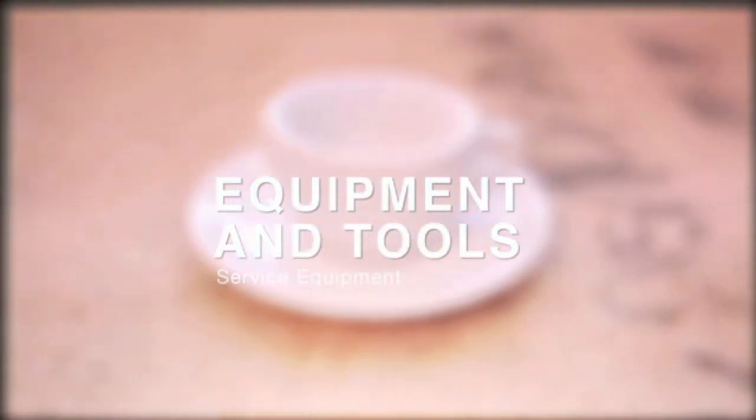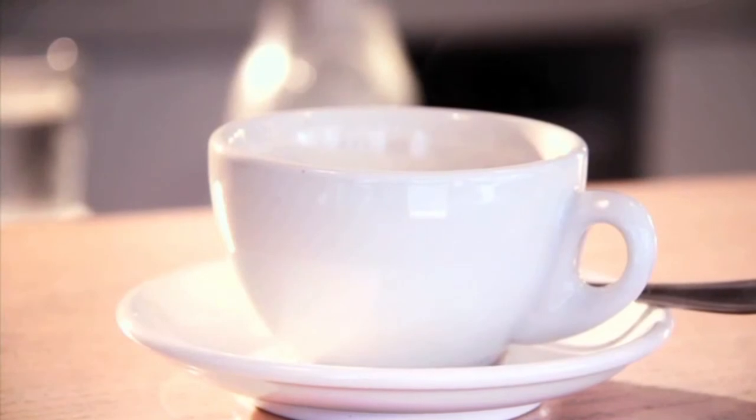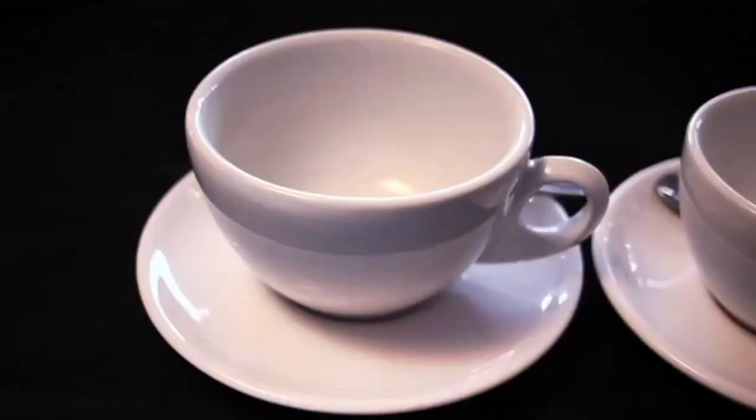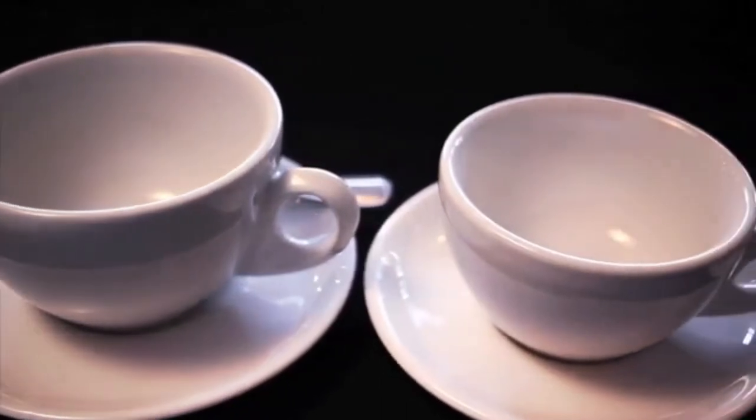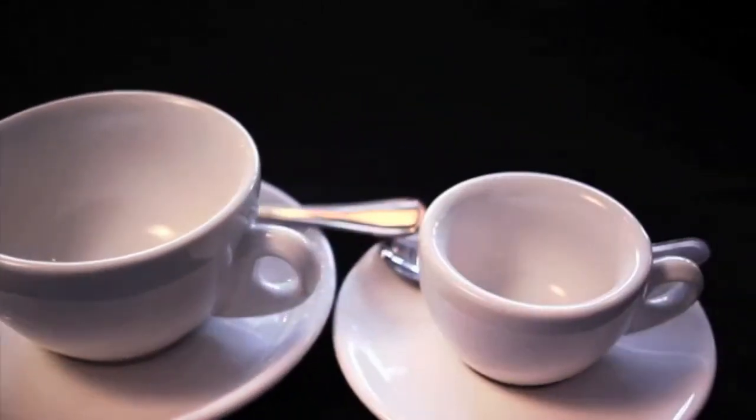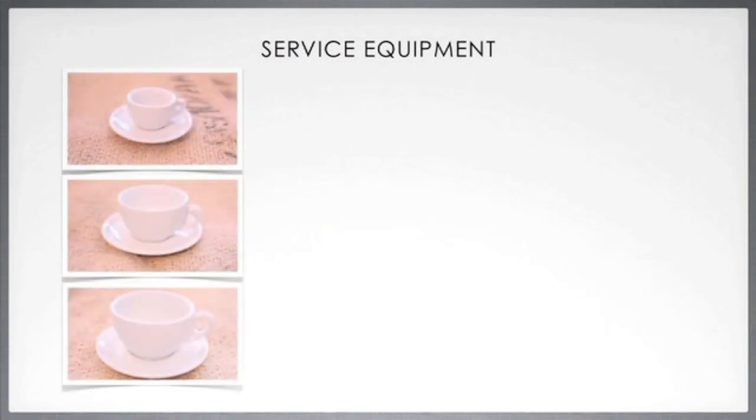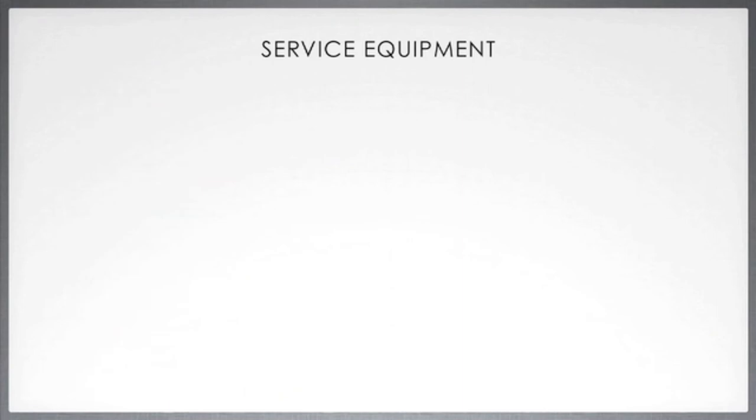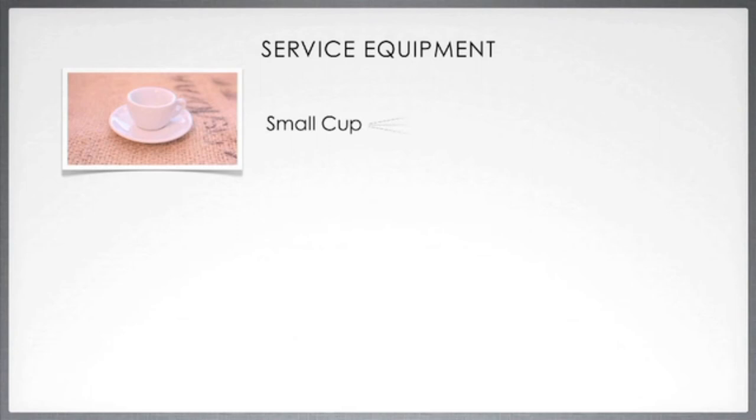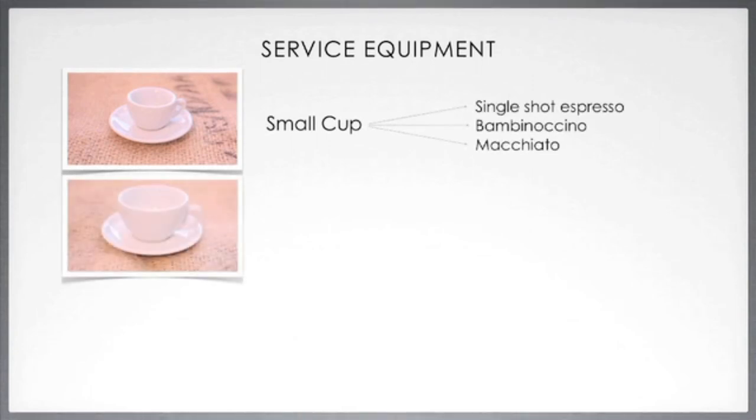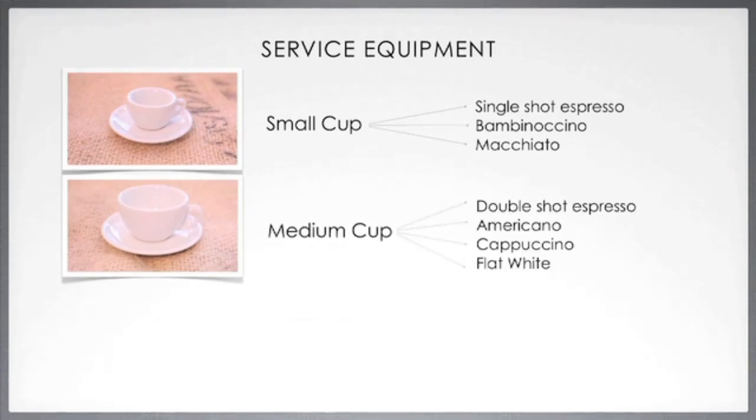Let's have a look at service equipment. First, the cups and mugs: each and every establishment will have their own set of cups and mugs. You need to ensure that you know the standard for which recipes are served in which type of cup or mug. Generally cups are smaller than mugs, so the recipes that require more liquid will then require a mug and vice versa. Something like an espresso should always be served in the espresso cup, which is a much smaller cup with a small saucer.